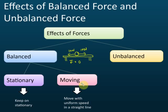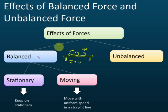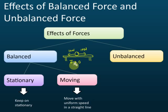So we say if the force applied on a moving object is balanced — net force equal to zero — the object will keep on moving with uniform speed in a straight line. The effects of balanced force: on a stationary object it stays stationary, and on a moving object it keeps moving with uniform speed in a straight line. It depends on the initial state of motion of the object.